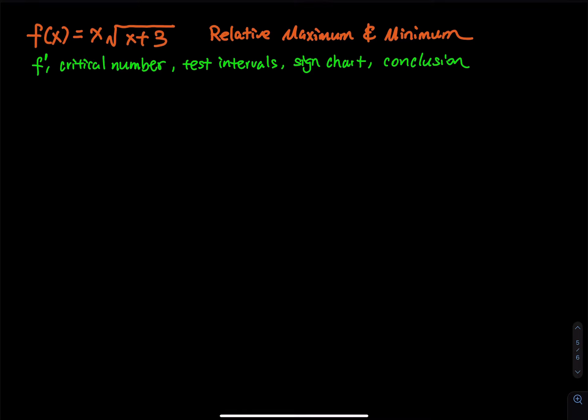f of x equals x times the square root of x plus 3. Let's find the relative maximum and minimum of this function. Another word for relative is local — local max, local min. So we will follow this procedure. Before we start finding f prime, I would like to point out the domain of this function, because the domain affects the test interval.